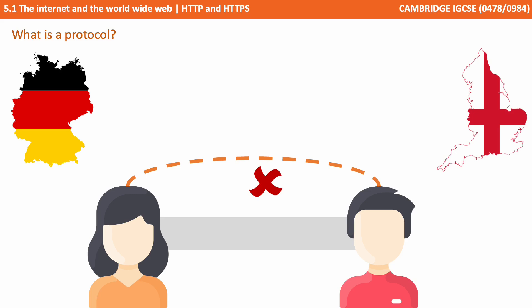Imagine here we have two people. The person on the left only speaks one language, which is German — that's her protocol. And the person on the right only speaks one language, in this case English, and that's his protocol. As these are the only protocols they understand, and they're different, the two people are effectively unable to communicate.